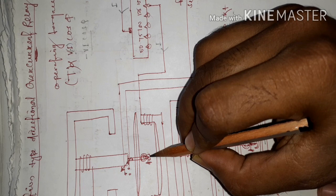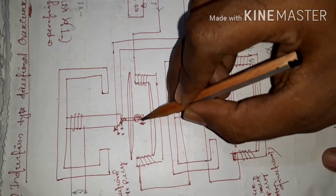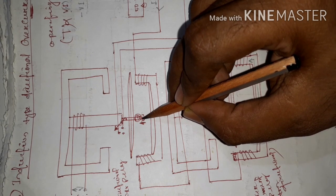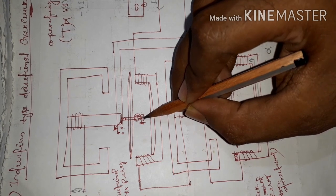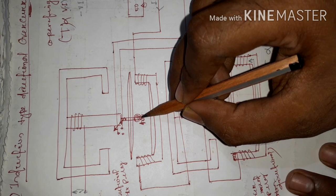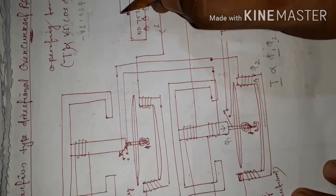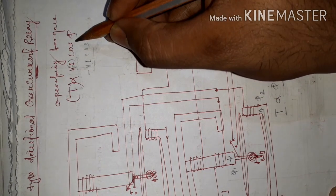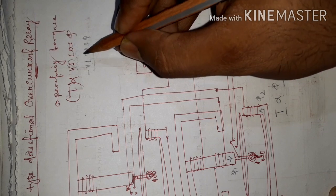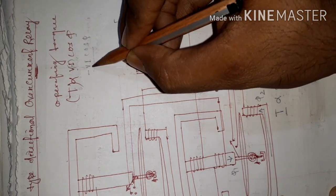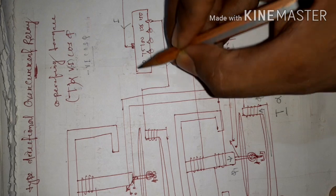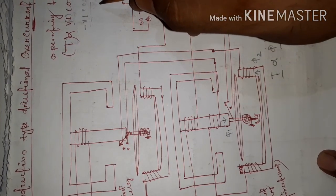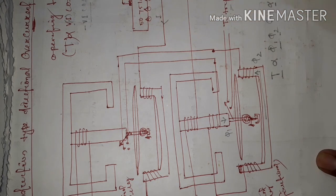But when a fault occurs in the system or the feeder which is to be protected by this directional overcurrent relay, the direction of electric current is reversed. We write minus I in the operating torque equation, so the operating torque becomes equal to minus VI cos φ.